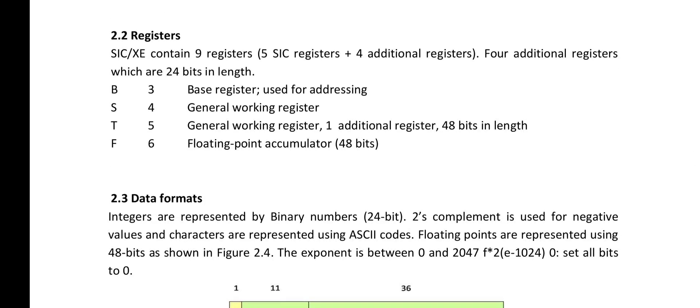In SIC XE architecture, there are 9 registers — the 5 SIC registers plus 4 additional registers. All registers are 24 bits in length. The additional registers are B, S, T, and F. The B register with number 3 is the base register used for addressing. The S register with number 4 and the T register with number 5 are general working registers.